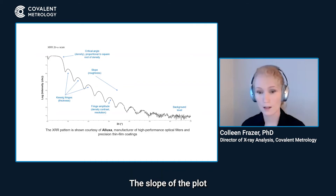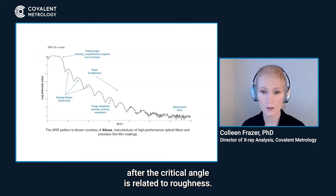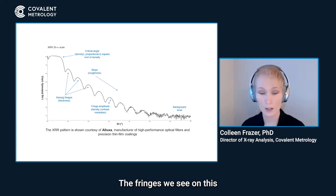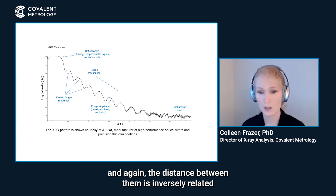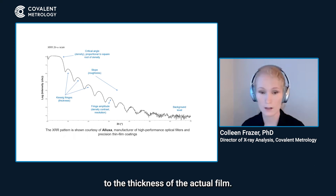The slope of the plot after the critical angle is related to roughness. The fringes we see on this, because there is a thin film, are related to thickness, and the distance between them is inversely related to the thickness of the actual film.